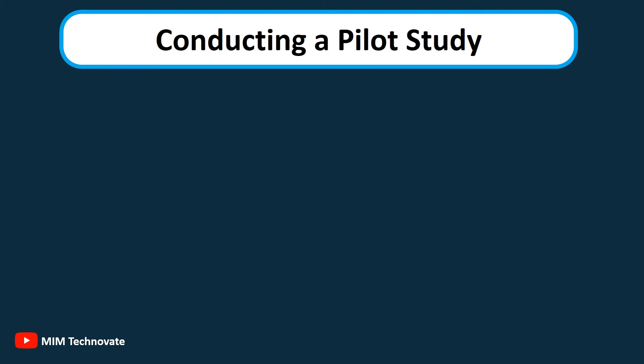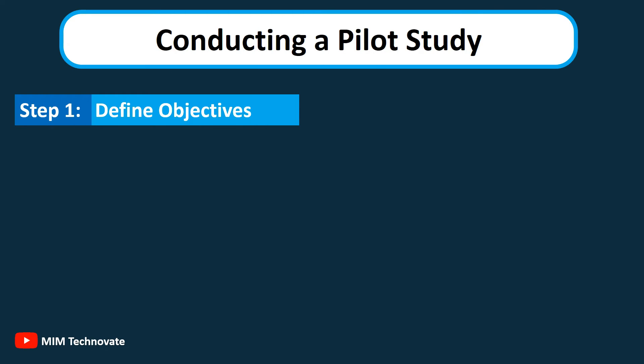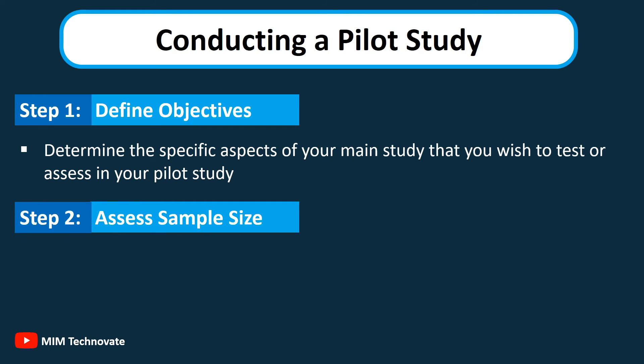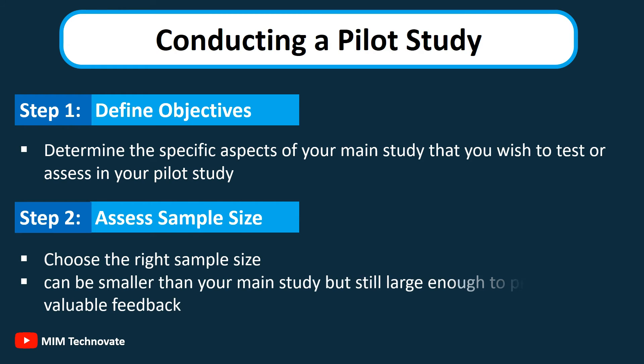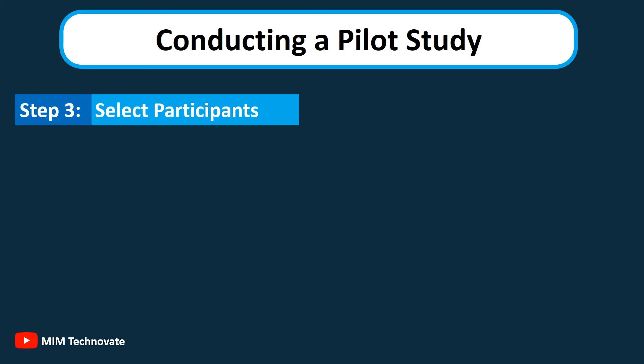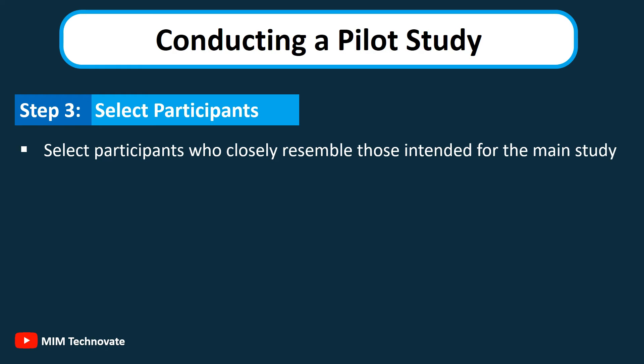Steps to Conduct a Pilot Study. Step 1 — Define Objectives: Determine the specific aspects of your main study that you wish to test or assess in your pilot study. Step 2 — Assess Sample Size: Choose the right sample size for your pilot study; this can be smaller than your main study but still large enough to provide valuable feedback. Step 3 — Select Participants: Select participants who closely resemble those intended for the main study.